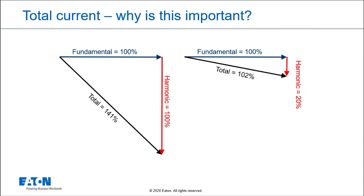Why is current distortion — THD and TDD — important? If you had 100% distortion on your current, your RMS current would be the square root of 100 squared plus 100 squared, which is 141 amps. If your fundamental current was 100 amps and your harmonics were 20 amps — 20% distortion — you'd end up with 102 amps. The point is: if your system worked at 100 amps but not at 102 amps, it was designed marginally to begin with. The difference between 100 and 102 amps in terms of actual system issues is insignificant. So even at 20% current distortion, the real concern goes back to voltage distortion.